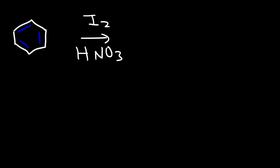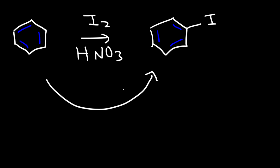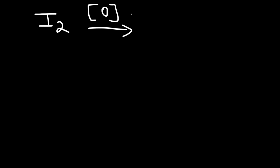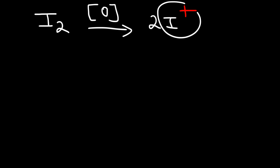Now we're going to go over one last reaction, and that is the iodination of benzene. If we react benzene with iodine using an oxidizing agent under acidic conditions like nitric acid, we can get iodobenzene. Another reagent set that can accomplish this transformation is iodine with hydrogen peroxide and sulfuric acid. What happens is that the oxidizing agent oxidizes iodine from its neutral state to a +1 oxidation state, and that is the electrophile that reacts with the benzene ring.